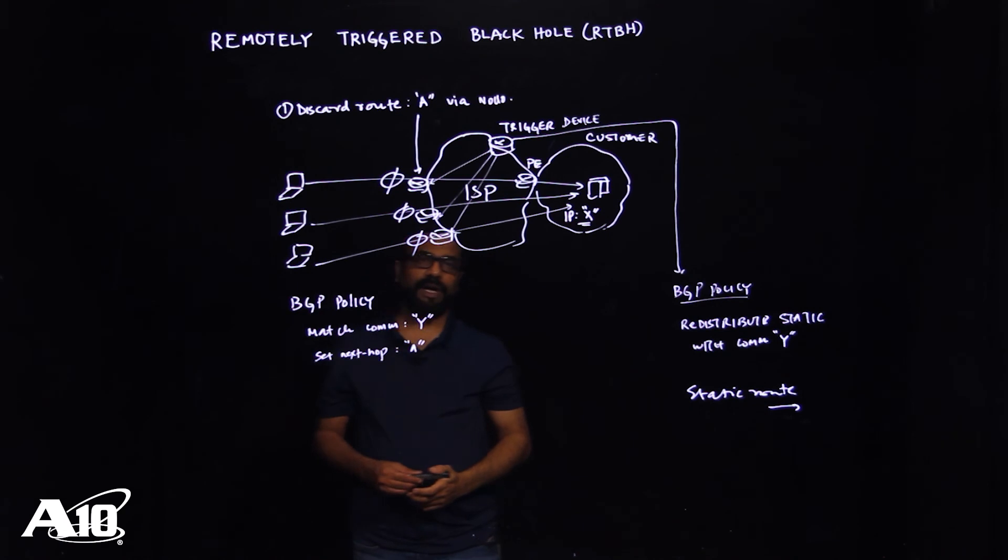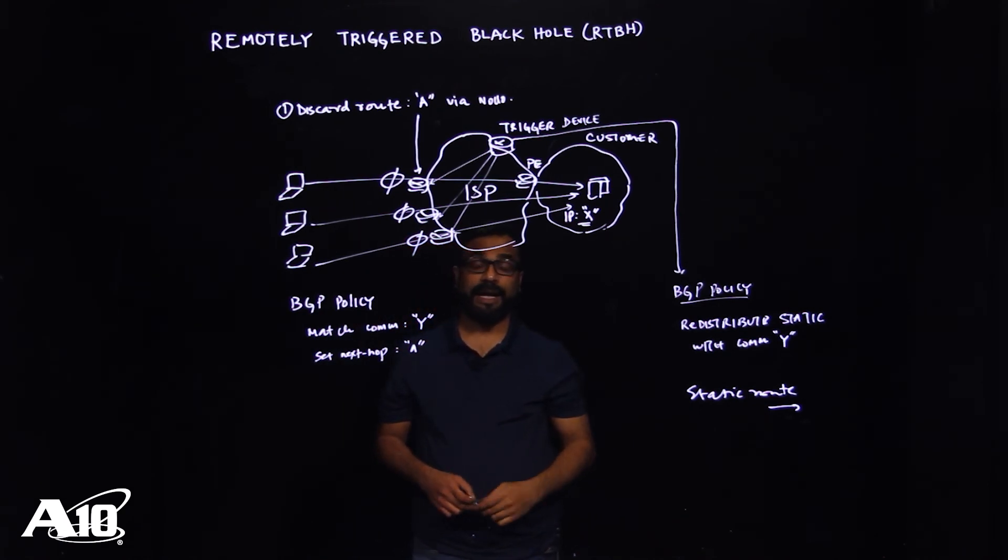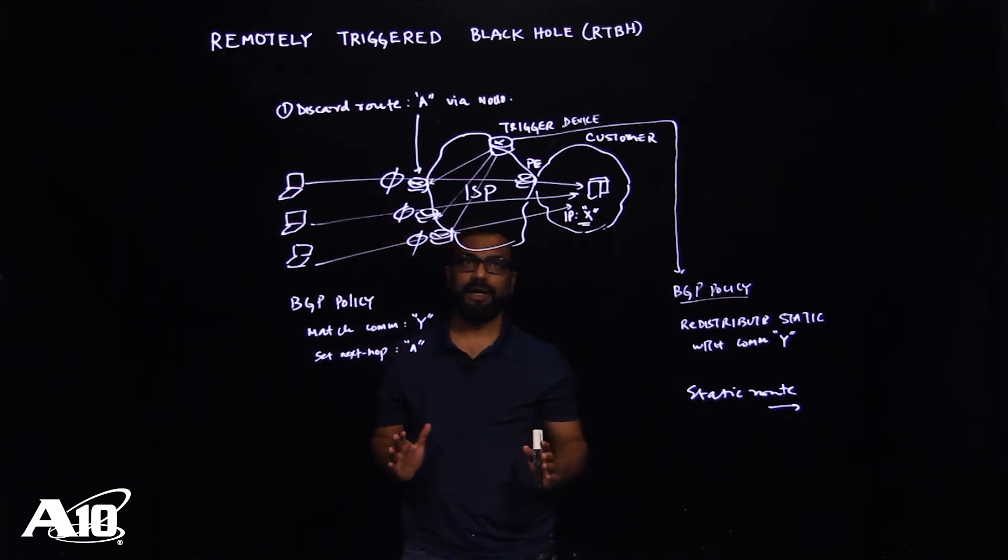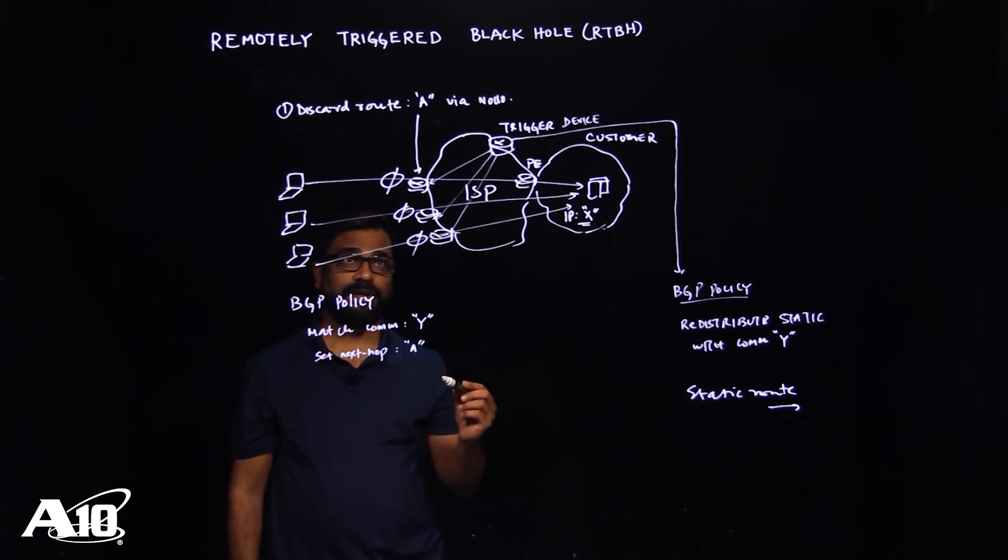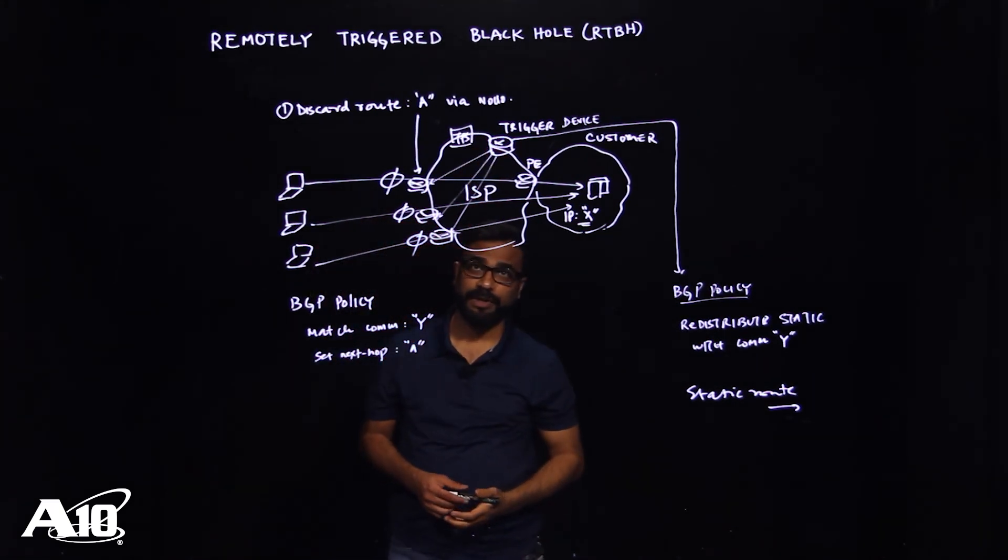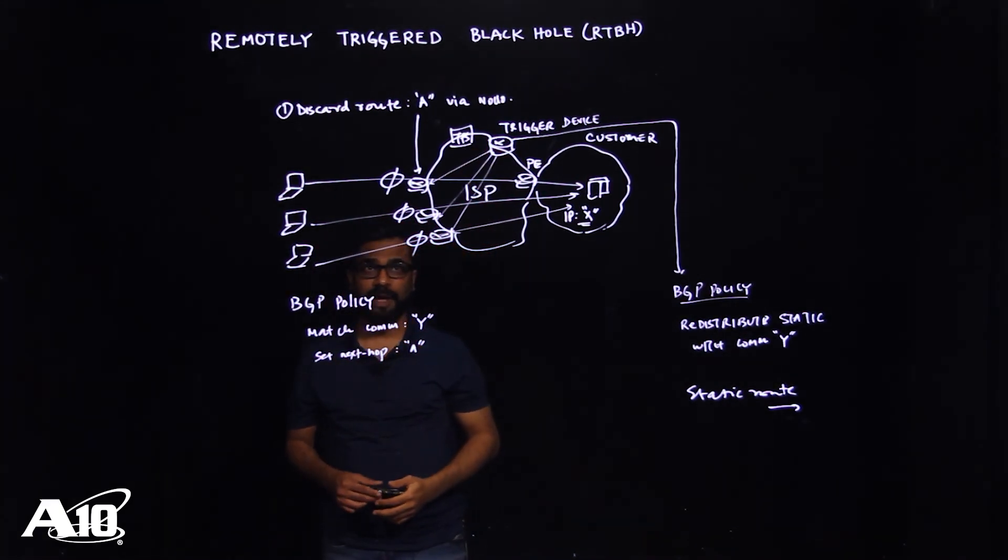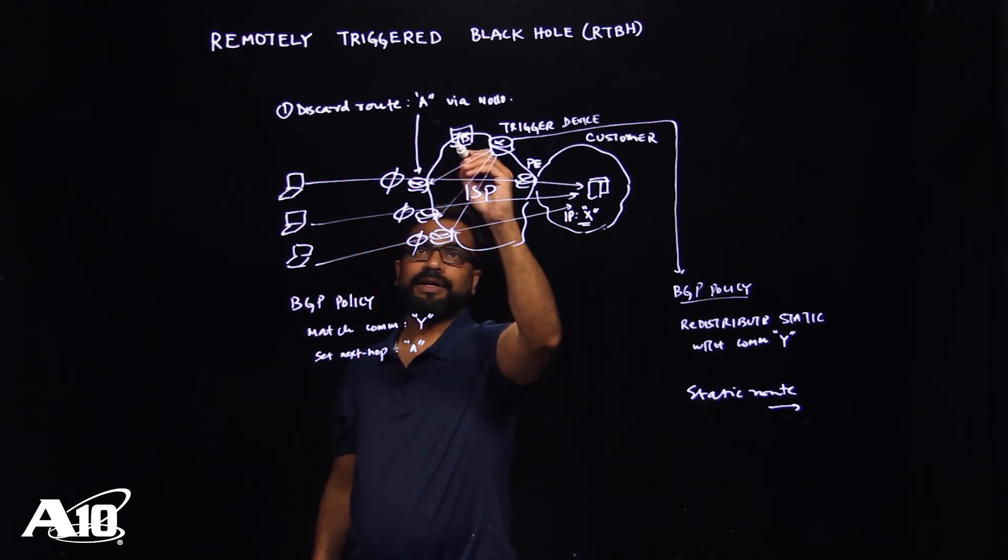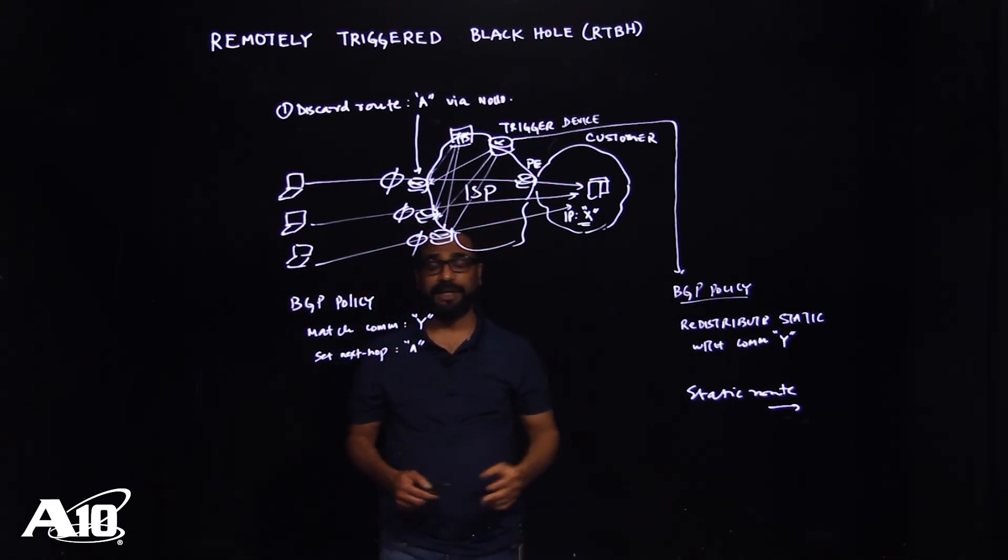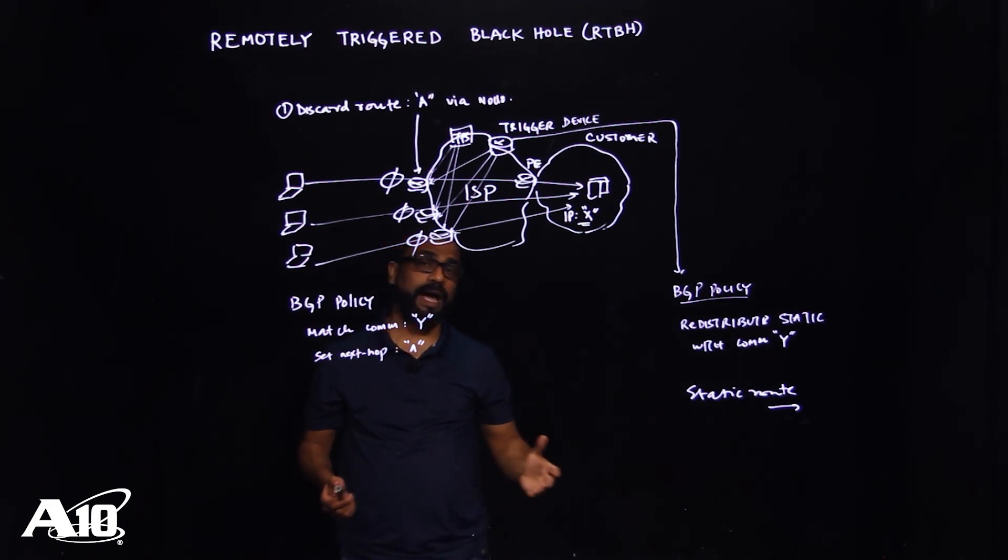One thing I would like to highlight is that in ATEN's DDoS protection solution, this whole process is actually completely automated. I mean, if somebody is using, you actually don't need a trigger device, that's what I'm trying to mean. If someone is using ATEN's TPS device for providing DDoS mitigation service or maybe infrastructure protection, all they need to have is IBGP pairings with the edge devices.